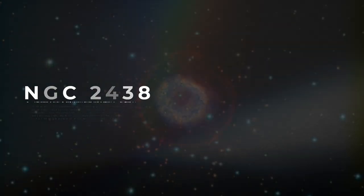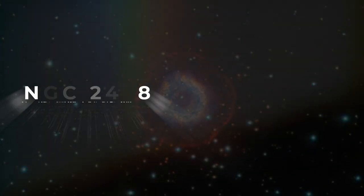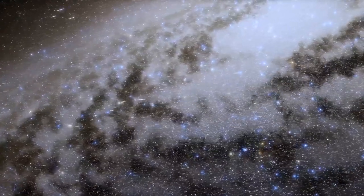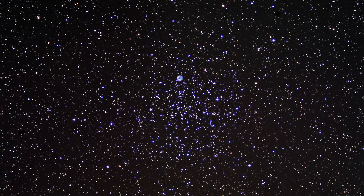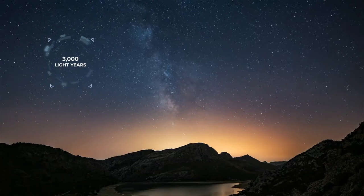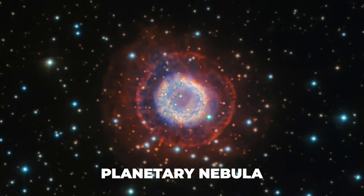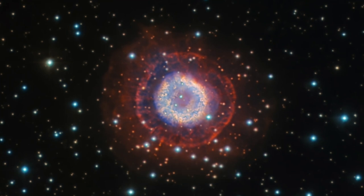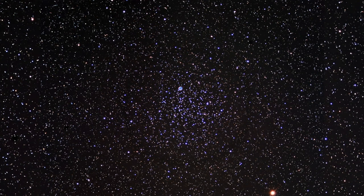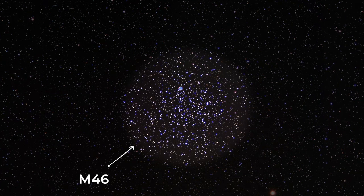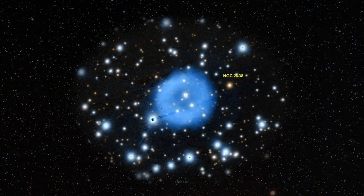Number 10. NGC 2438. This abnormal nebula was first discovered in the 18th century and sits only 3,000 light years from Earth inside the constellation Puppis. This planetary nebula is especially bright due to its location on the outskirts of an extremely bright star cluster known as M46, which increases the luminosity of the gases.